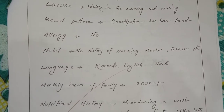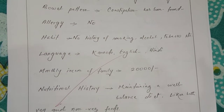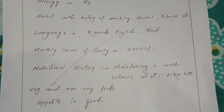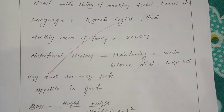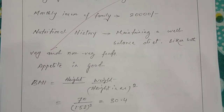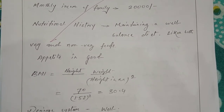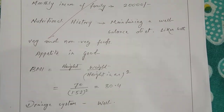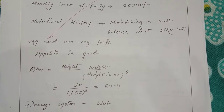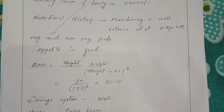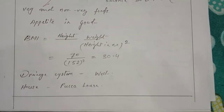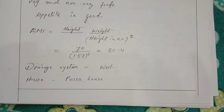Exercise: walks in the morning and evening. Bowel pattern: constipation has been found. Allergy: no allergy. Habit: no history of smoking, alcohol, or tobacco. Language: Kannada, not English and Hindi. Monthly income of the family: twenty thousand. Nutritional history: maintaining a well-balanced diet; she takes both vegetarian and non-vegetarian foods. Appetite is good. Then BMI and drainage system.